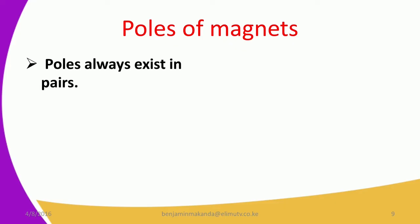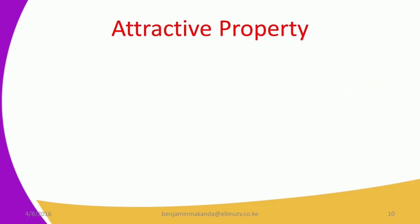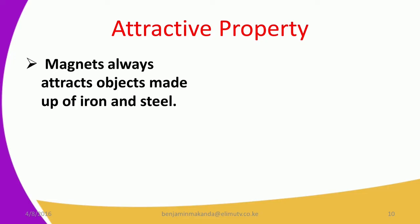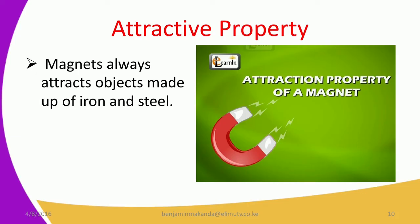Magnets have poles and these poles always exist in pairs — they cannot be separated. If we have a north pole, a south pole must also exist, and vice versa. For the attractive property, magnets always attract objects made up of iron and steel. The materials being attracted by a magnet are called magnetic materials because they have small substances that make them attracted to a magnet.